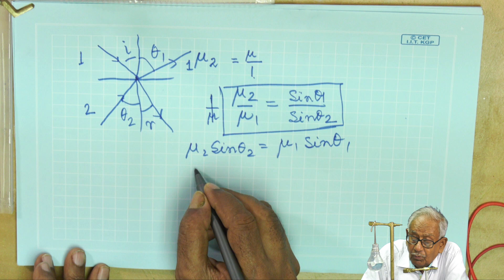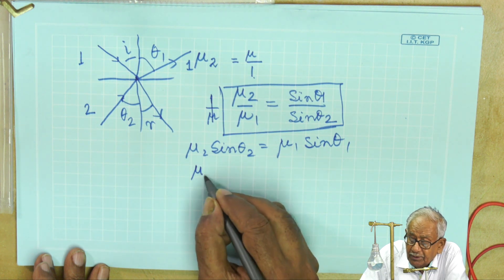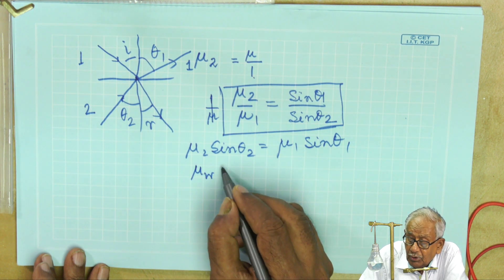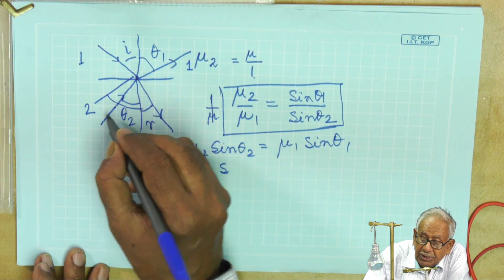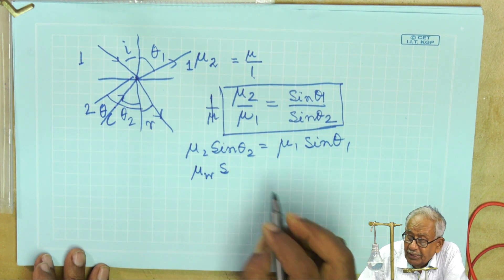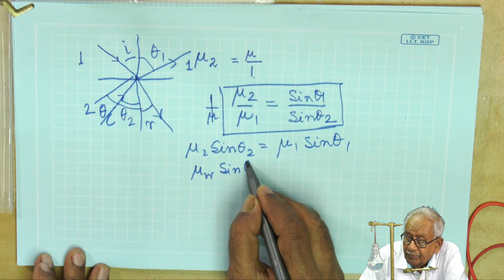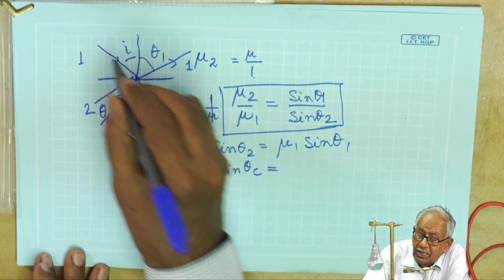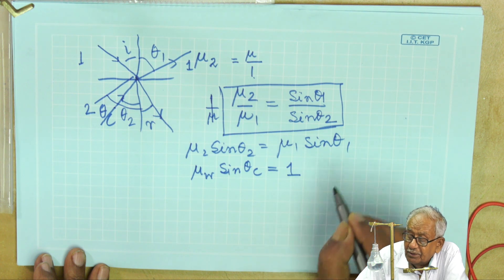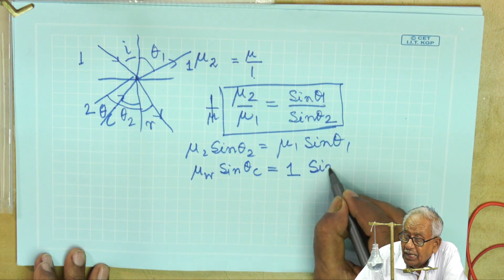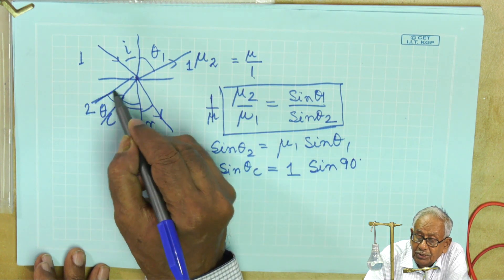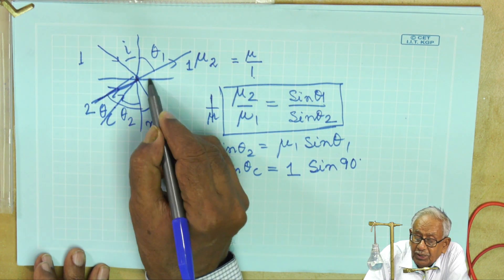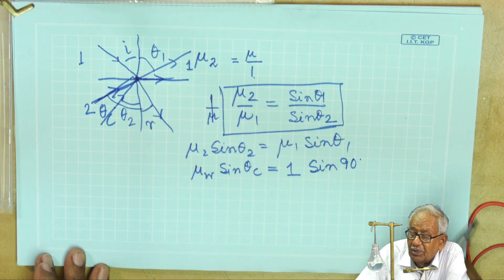Now in case of water, if the refractive index of water is μw and the angle now becomes the critical angle θc, then you see it will be sin θc. And for air, if we consider the refractive index is 1 and sin 90 degrees...